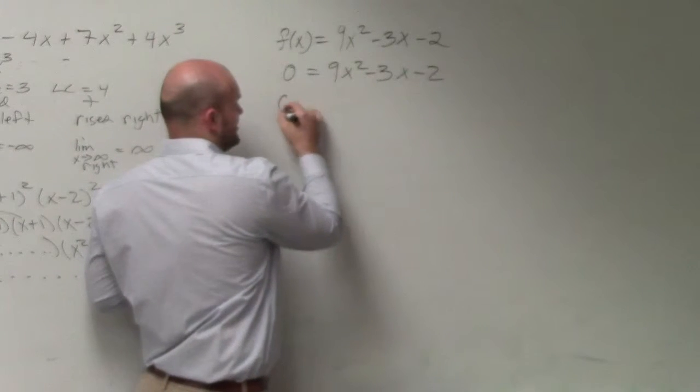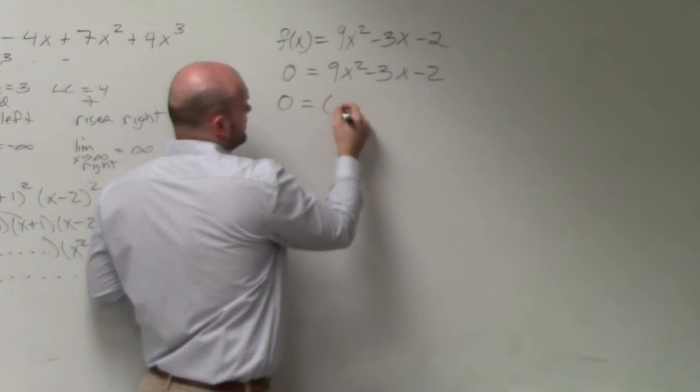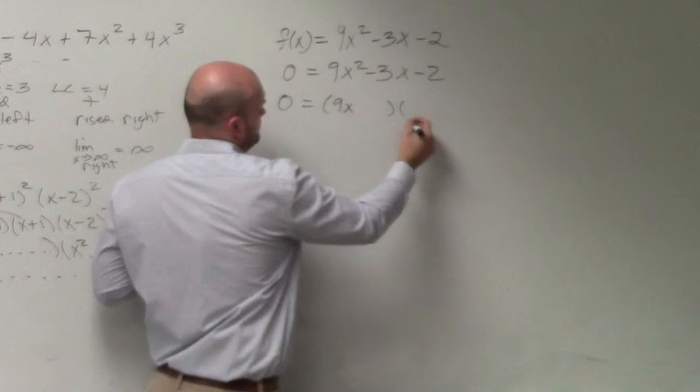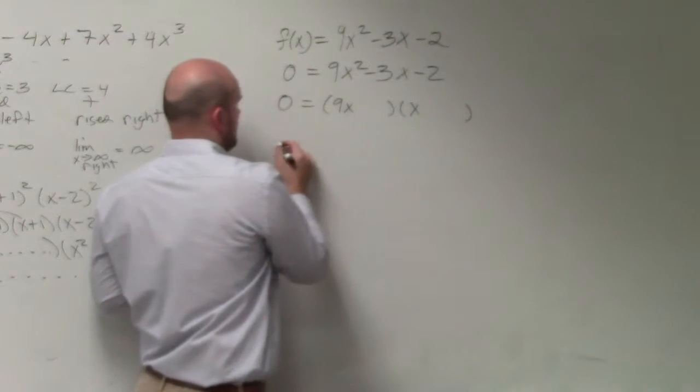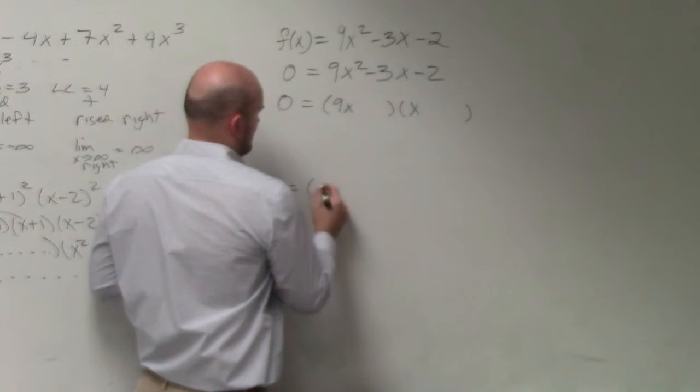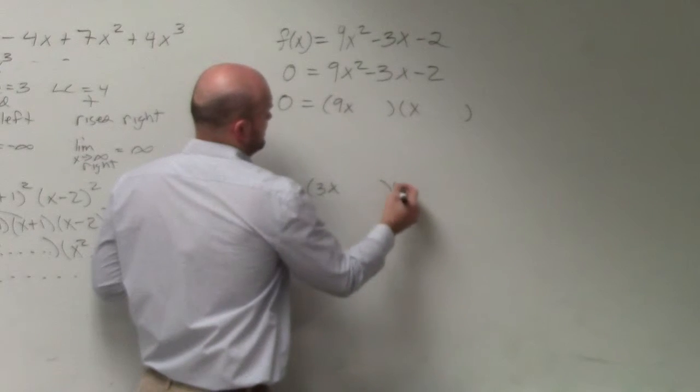Well, there's only a couple of possibilities we could have. We could do 9x times x, or we could do 3x times 3x.